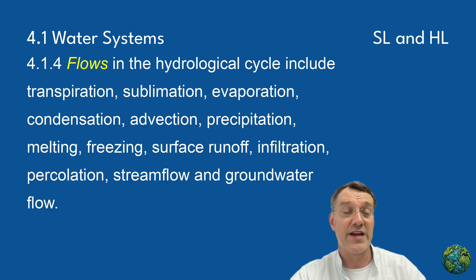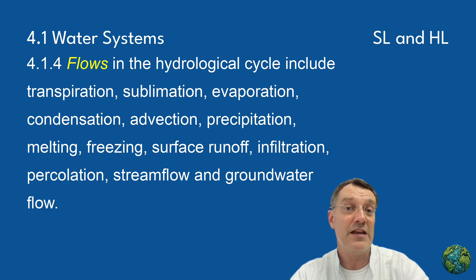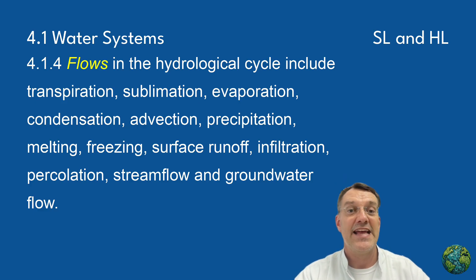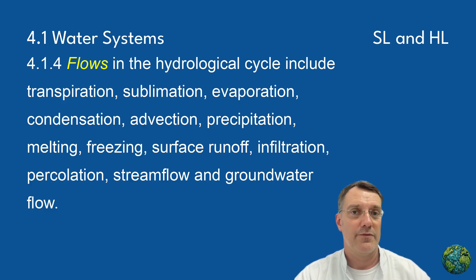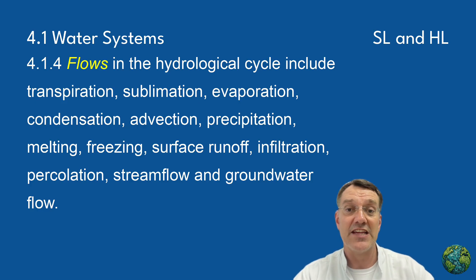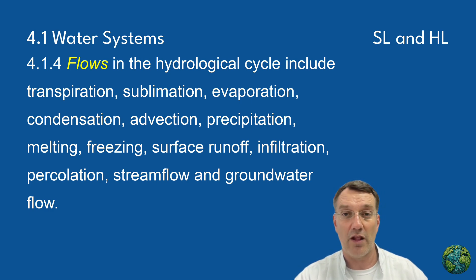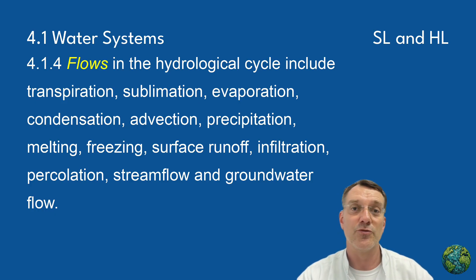Flows in the hydrological cycle include transpiration, sublimation, evaporation, condensation, advection, precipitation, melting, freezing, surface runoff, infiltration, percolation, stream flow, and groundwater flow. Each of these processes represents a different way that water moves between stores. Transpiration is the release of water vapor from plants, moving water from organisms back to the atmosphere. Sublimation is the direct conversion of ice to water vapor, moving water from ice caps and glaciers back to the atmosphere. Advection is the horizontal movement of water vapor by wind — you can think of that as clouds moving across the landscape as they drift by on the wind.